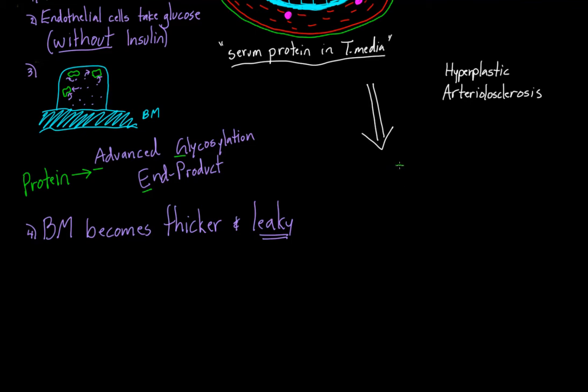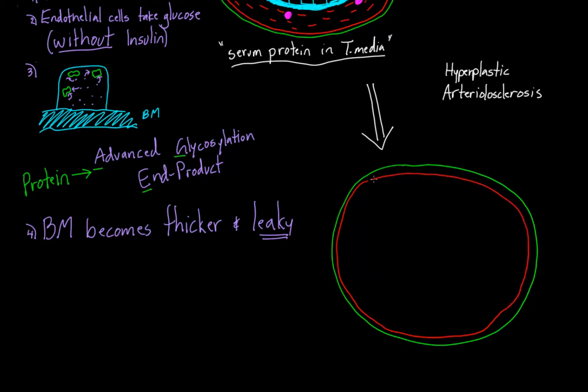You can start by imagining the same vessel. This is the external layer, the tunica externa, and right on the inside of that is the tunica media. We know this tunica media is full of smooth muscle cells.